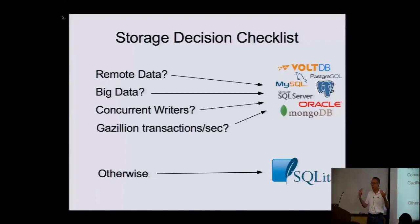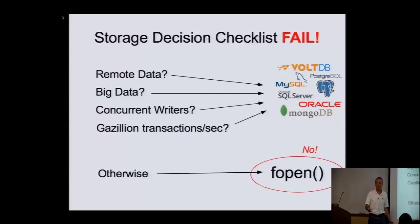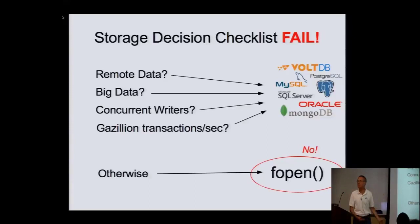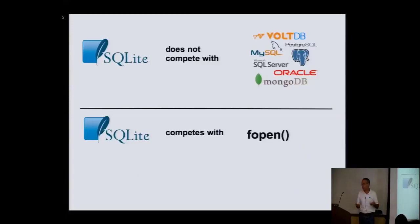Where people mess this up is they do the first part of that checklist right, get down to the bottom and say, well I don't have any of these problems — I'm just going to open a file and write a bunch of JSON into it or some binary format I made up. That's the use case for SQLite. SQLite is not really competing against these other database engines you study all the time. It's competing with fopen. That's its goal.